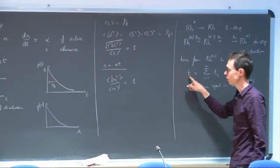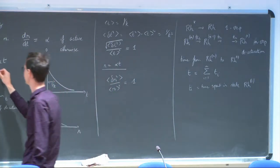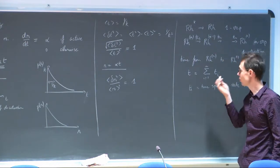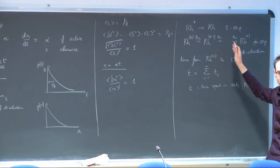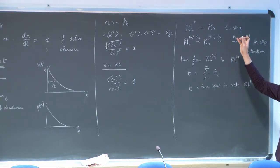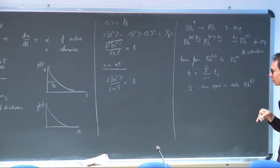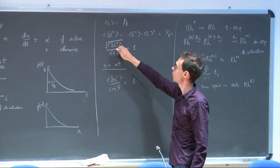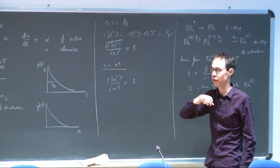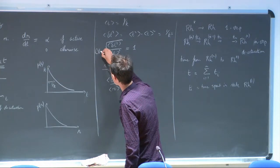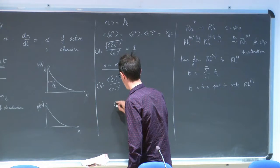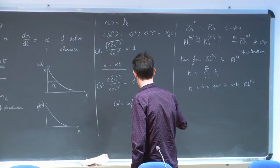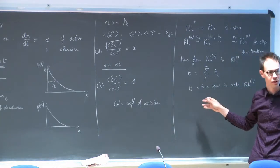So you can calculate what you're interested in. We still use a model where the total activity generated by rhodopsin is simply proportional to the time it stays in any of the activated states — as soon as it gets into r0, it stops being active. So what I'm interested in is calculating the fractional variance, or coefficient of variation. In the single-step case it was 100%. How much is it in this case?